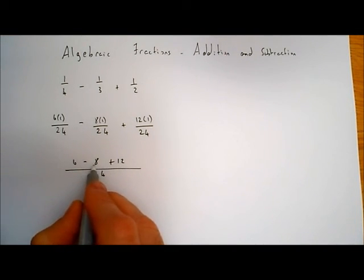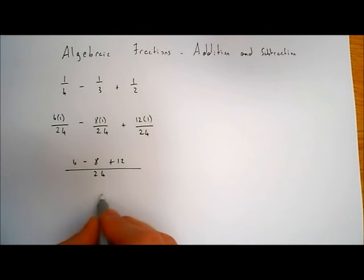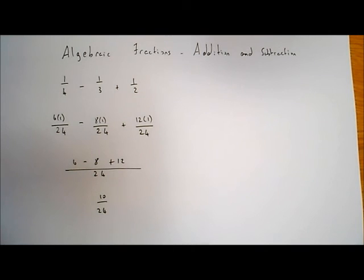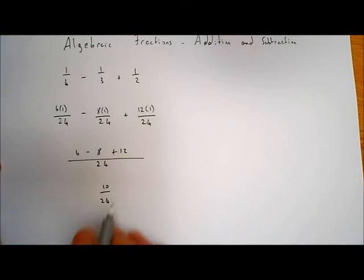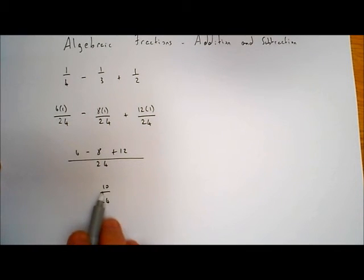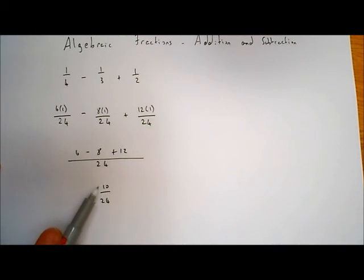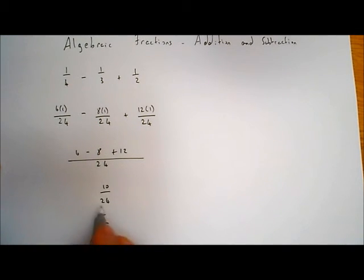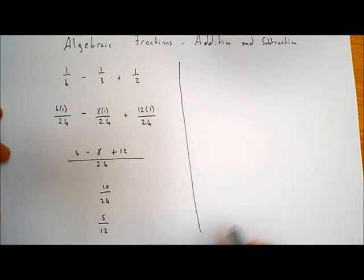So I have 6 minus 8, which is minus 2. And minus 2 plus 12 is 10, so I get 10 over 24. Now I can simplify that because I can find a common factor between 10 and 24. The highest common factor is 2, so I divide numerator and denominator by 2: 2 into 10 goes 5 times and 2 into 24 goes 12 times. So we get 5 over 12.